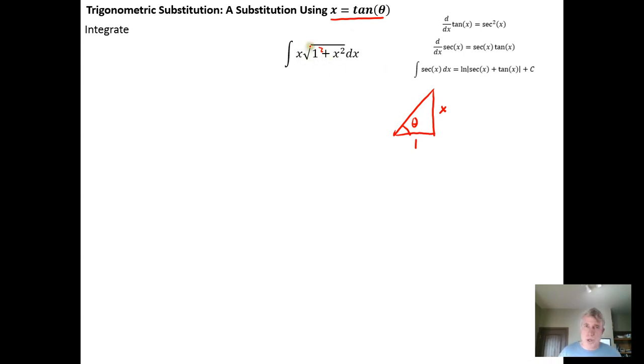So the square root of 1 plus x squared has to be the length of the hypotenuse, 1 plus x squared.